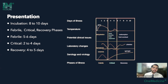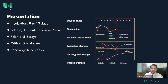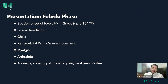The incubation period begins from the day an infected mosquito bites. The virus is inoculated into the human host and takes about 8 to 10 days to replicate and produce fever. Then we have the febrile phase, critical phase, and recovery phase. The febrile phase lasts 5 to 6 days, the critical phase 2 to 4 days, and the recovery phase 4 to 5 days. The febrile phase is marked by sudden onset high-grade fever, which can be associated with chills.